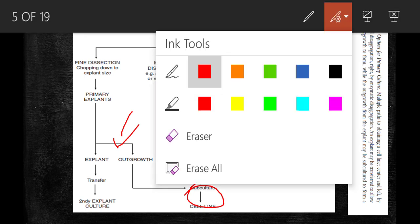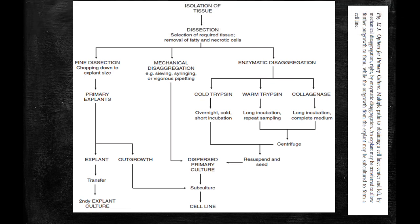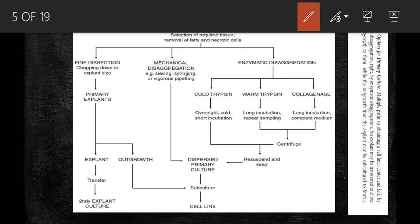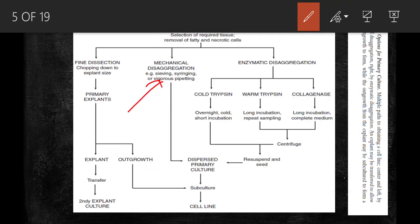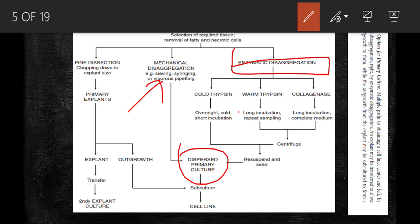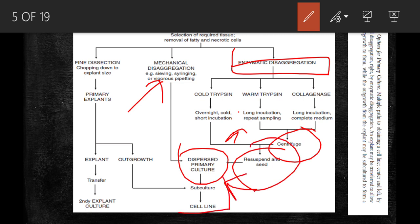In mechanical disaggregation, cells are disaggregated by syringing and vigorous pipetting, ultimately yielding a primary culture that is subcultured into a cell line. In enzymatic disaggregation, there are three steps: cold trypsin, warm trypsin, and collagenase. Cold trypsin involves overnight short incubation; warm trypsin is for long incubation and repeated sampling; collagenase is for long incubation in complete medium, followed by centrifugation, resuspension, and subculture.